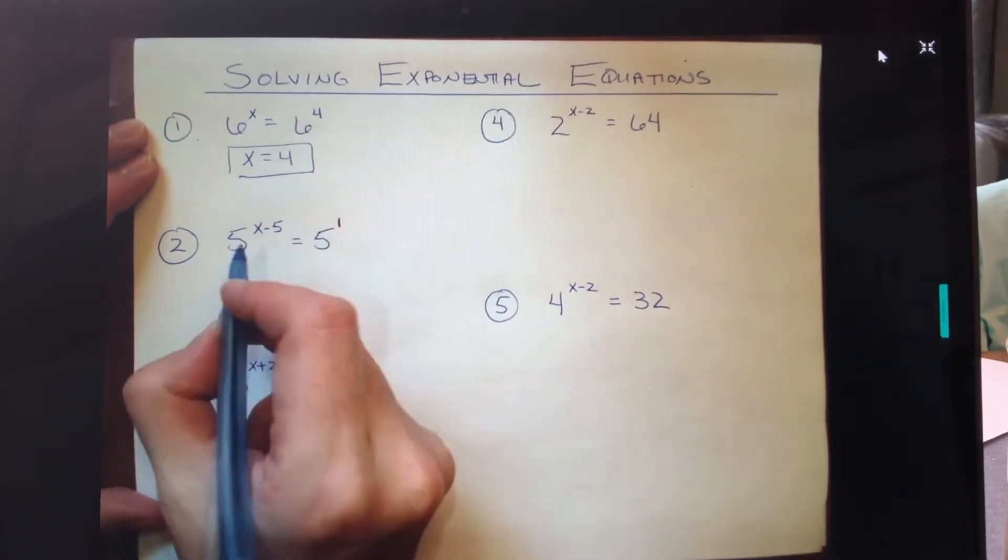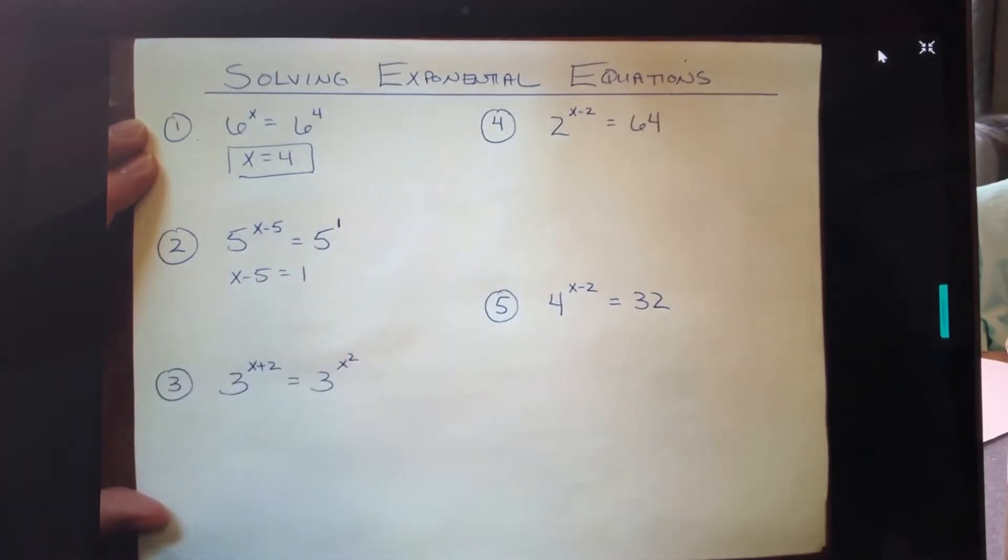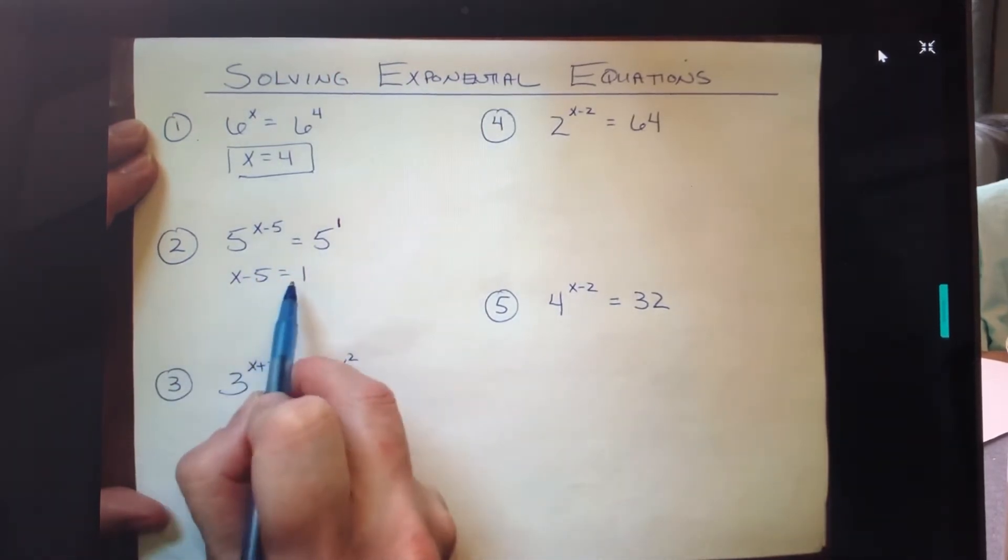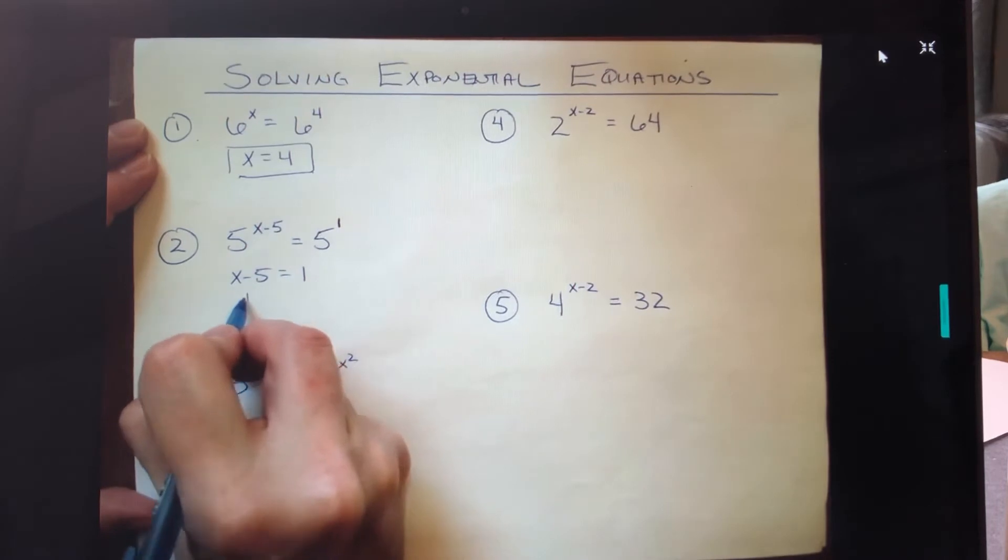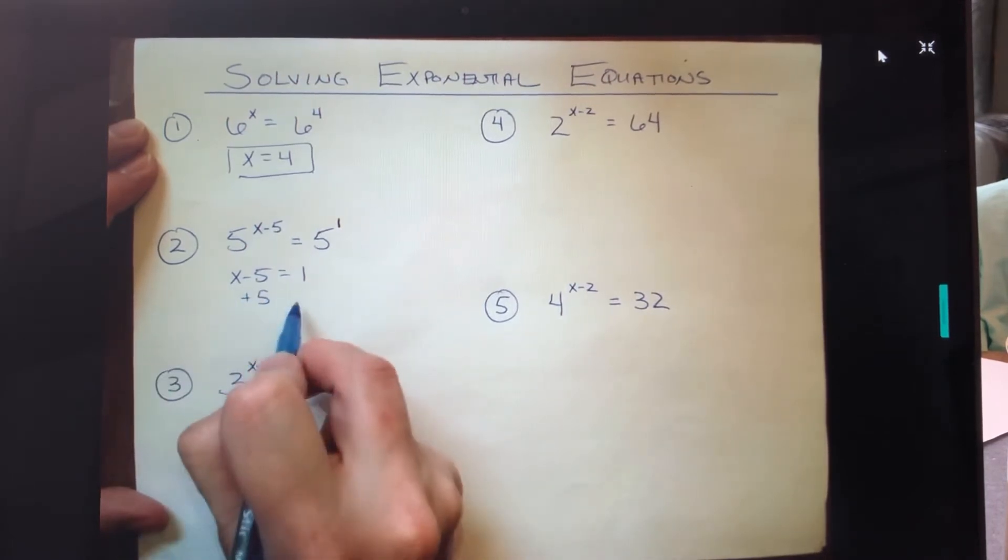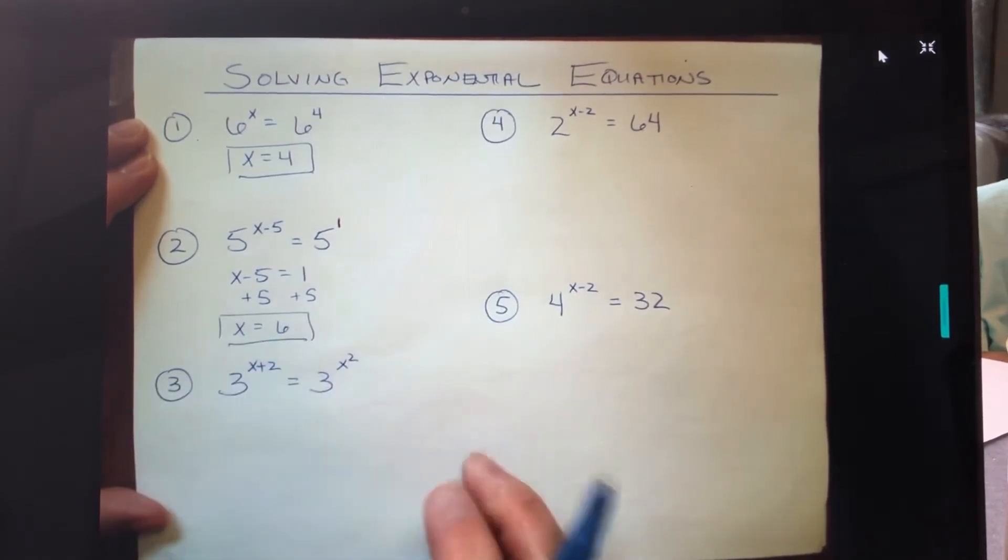So again, bases match. We're going to grab these expressions that are in those exponent positions and set them equal to each other, so we have x minus 5 equals 1. This is not already isolated for x, so we're going to need to do a little bit of algebra here to solve for x. Can do that fairly simply by adding 5 to both sides, and I will get x equals 6 as my solution.